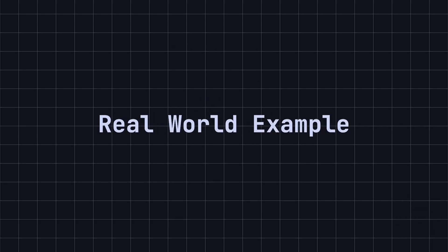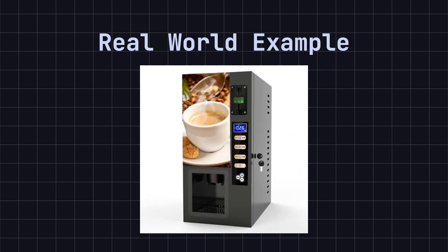Imagine you're using an automatic coffee machine. This coffee machine handles your requests differently based on its current state. Initially, the machine is in an idle state, waiting for you to select a coffee type. Once you make a selection, it switches to a preparing state and starts making the coffee.